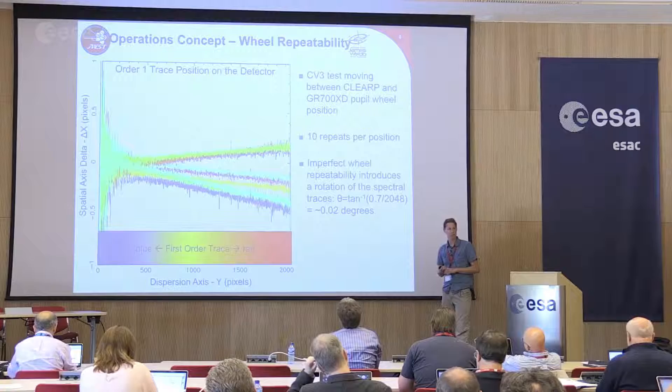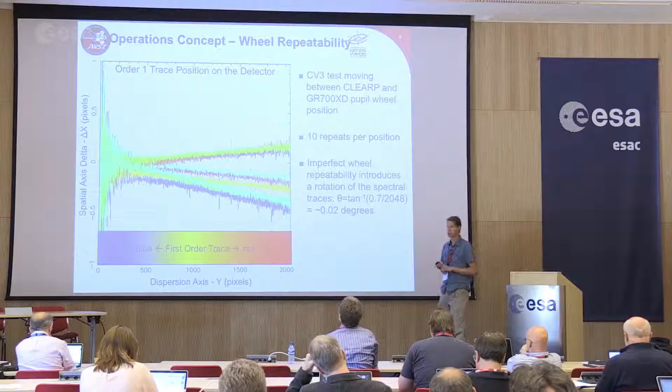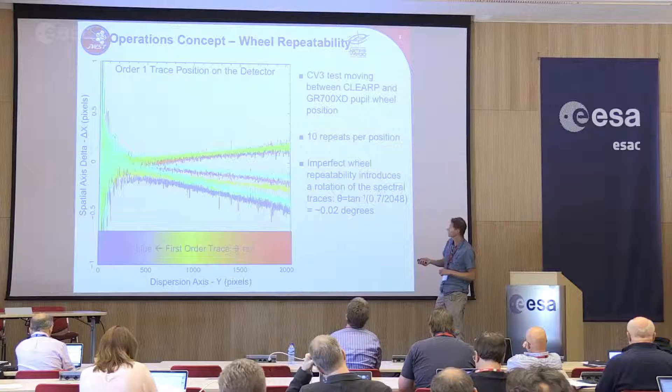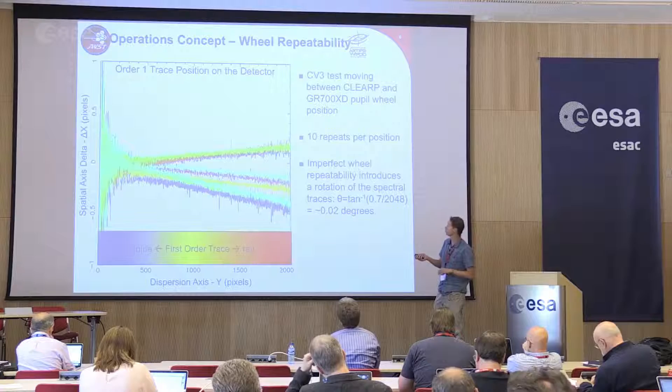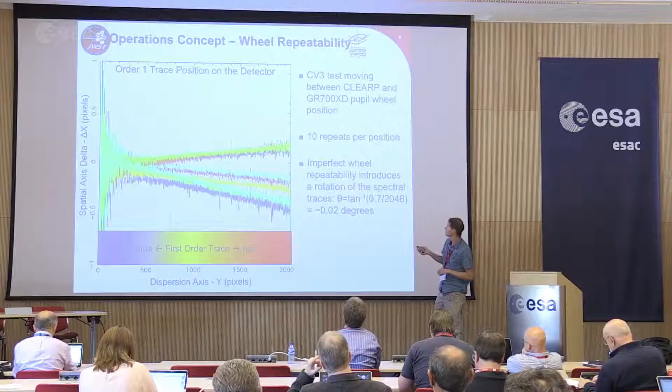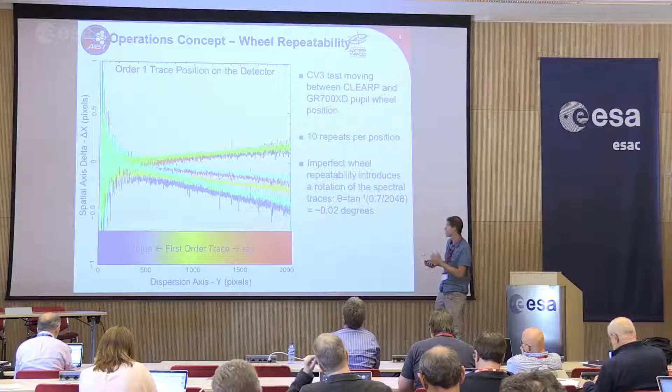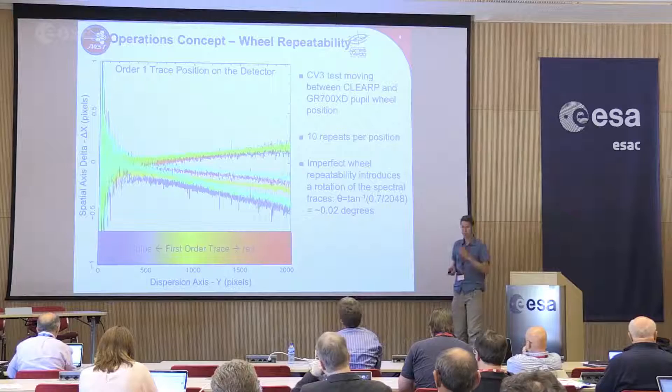Another thing we found is that the wheels do not always come back to exactly the same position. This causes some tilt in the trace each time you move the wheels. At the blue end of the spectrum, the spectrum is basically in the same place every time. But at the red end, we get an offset of up to about a pixel, corresponding to a very small rotation. This will have to be taken into account when calibrating — working out exactly where the trace is.